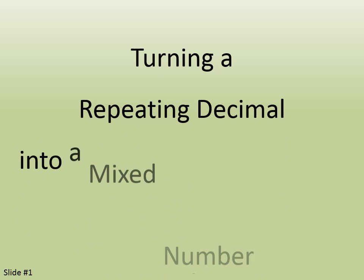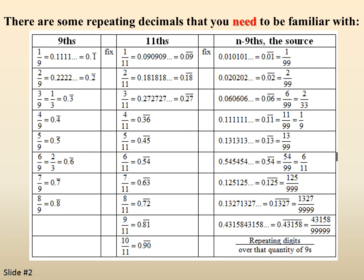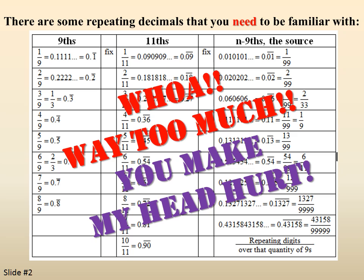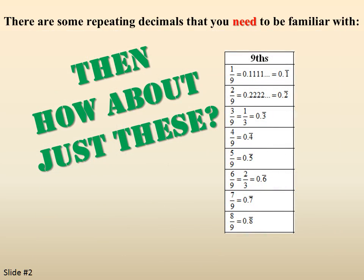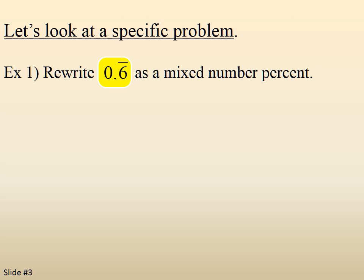Turning a repeating decimal into a mixed number percent — there are some repeating decimals you need to be familiar with. Let's focus on the nines column. Notice that one over nine is zero point one repeating, two over nine is zero point two repeating, three over nine is point three repeating, and so on. So if you see a single digit repeating on the right side of the decimal, it's that number over nine.